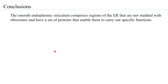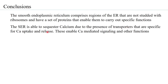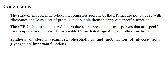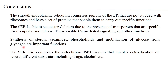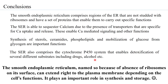In conclusion, the smooth endoplasmic reticulum comprises regions of the ER not studded with ribosomes. It sequesters calcium via specific transporters, enabling calcium-mediated signaling and muscle contraction. Synthesis of sterols, ceramides, phospholipids, and mobilization of glucose from glycogen are key functions. It also houses the cytochrome P450 system enabling detoxification of drugs, alcohol, and other substrates. The smooth ER can extend right to the plasma membrane depending on the cell's functions and plays an important role in both synthesis and storage.